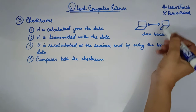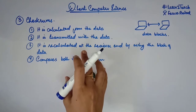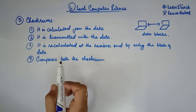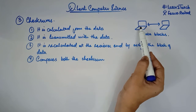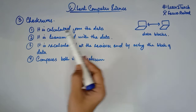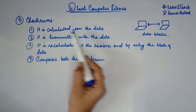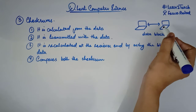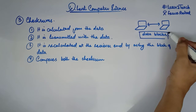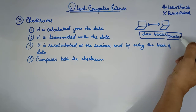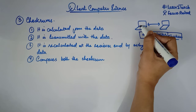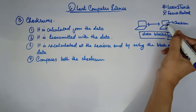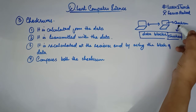So the method of checksum works like this: you calculate the checksum at the sender's end using the block of data to be transmitted. That checksum is then integrated with the data and transmitted to the receiver. The receiver recalculates the checksum when it receives the data blocks, then compares both checksums.